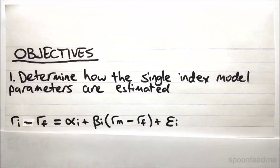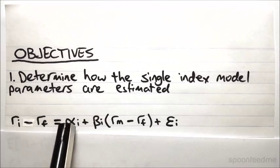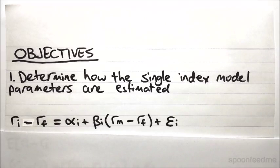So this is our equation for the single index model. The only problem we have is that we don't actually know what alpha or beta are, and we also don't really know what the variance of the epsilon term is.